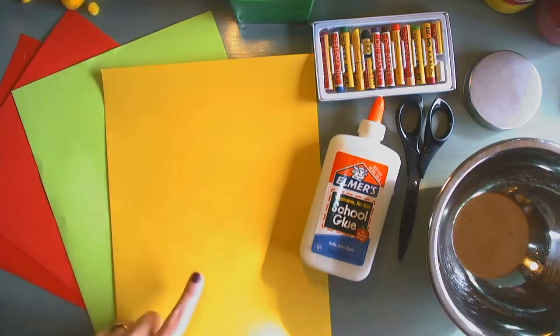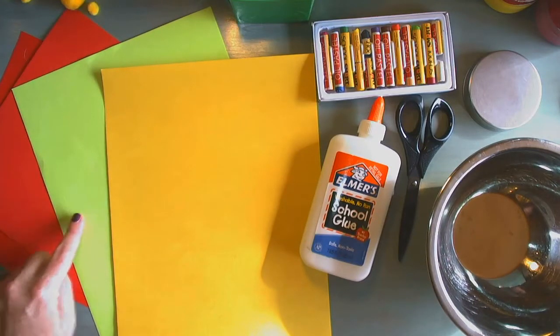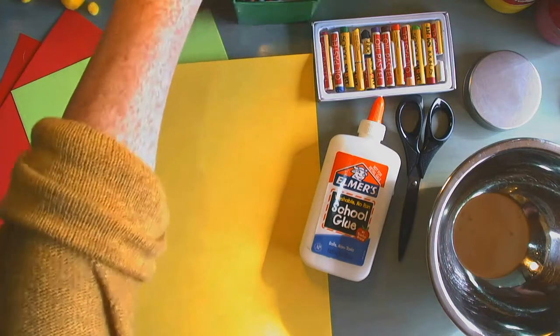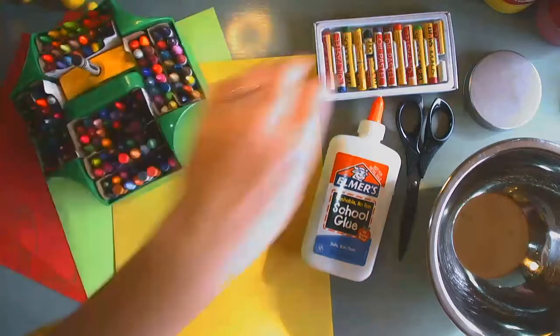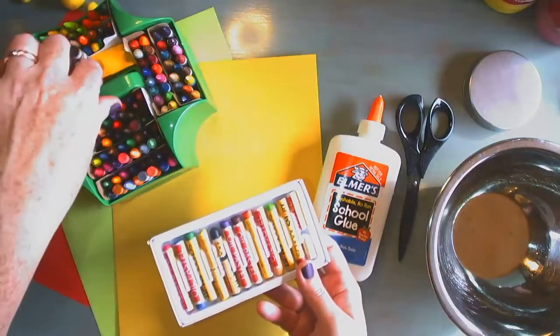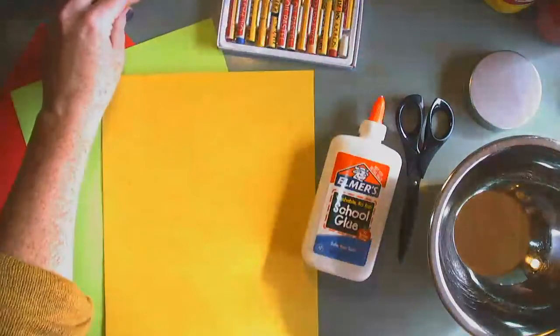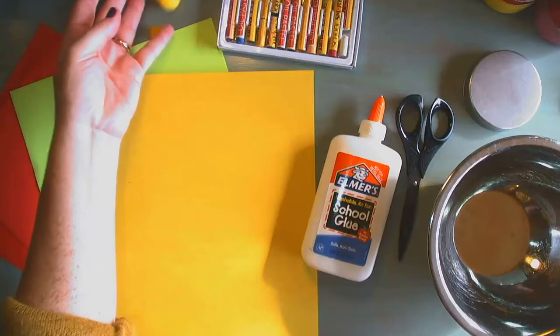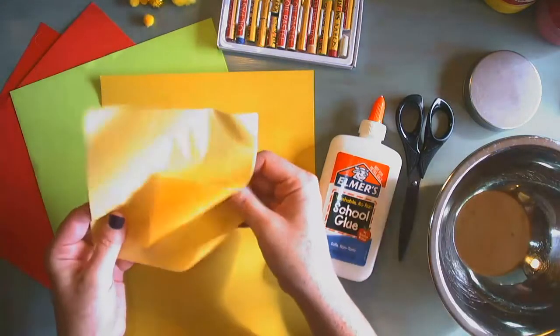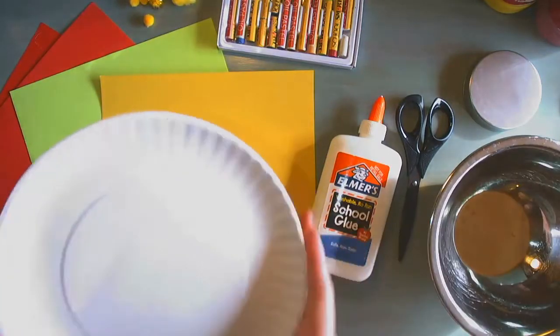We're going to start today using construction paper, two pieces of red, one piece of green, and one piece of yellow construction paper. If you don't have construction paper you can always use some crayons or oil pastels and color your paper. Remember use what you have. If you have little things like pom-poms around the house or some tissue paper you can also use that and I will demonstrate how you can use it today.